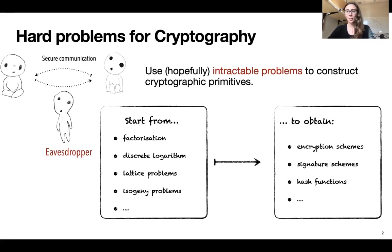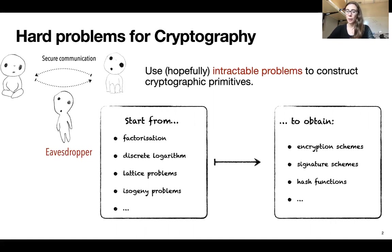As we all know, cryptography gives us means to communicate in a secure way between two entities, even in the presence of an eavesdropper. In order to do so, cryptographic protocols rely on some building blocks, which are cryptographic primitives that rely on hard, intractable mathematical problems. These problems can be factoring integers, computing discrete logarithms, or even problems related to lattices or isogenies.